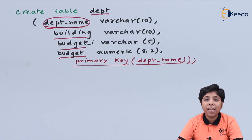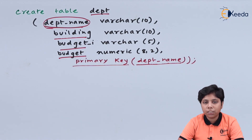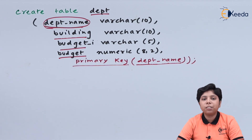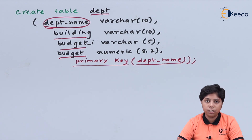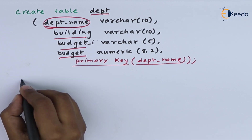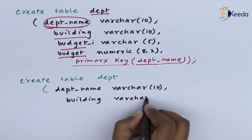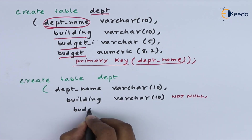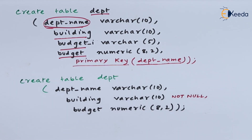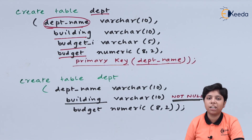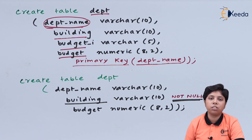Now we will see what the NOT NULL constraint is. Other than the primary key, there can be any attribute that should have a NOT NULL constraint. When we put the NOT NULL constraint, we are defining that a particular attribute cannot be left null while inserting values into that relation. For example, the building attribute has NOT NULL beside it, so building cannot be left null when inserting into the department relation.